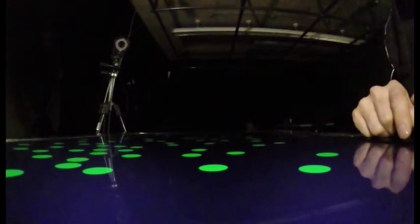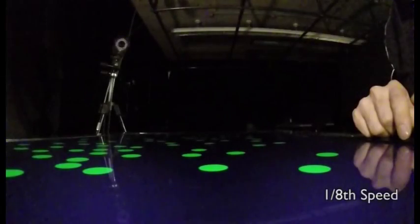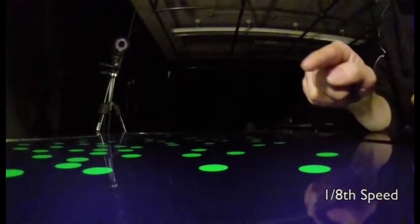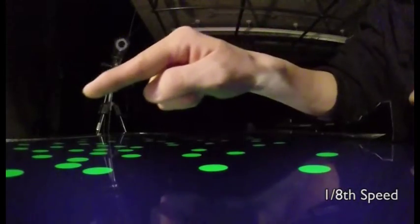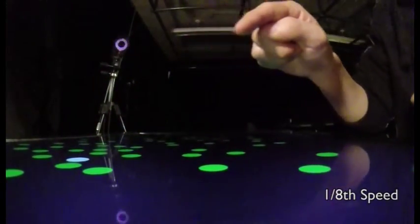Here, the user reaches out to touch a target on a tabletop surface. Without the aid of our prediction model, there is 150 millisecond latency between the user's touch and the corresponding visual response to that touch. In this case, the response is the circle changing from green to white.